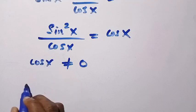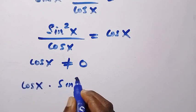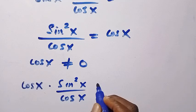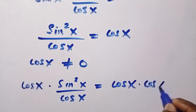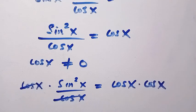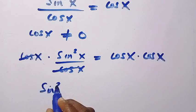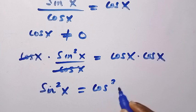So the first idea, we are going to multiply it with cos x: cos x multiplied by sin squared x divided by cos x equals cos x multiplied by cos x. So cos x cancels cos x. Then we have sin squared x equals cos squared x.